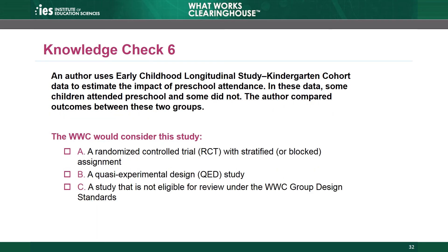Knowledge Check 6. An author uses early childhood longitudinal study kindergarten cohort data to estimate the impact of preschool attendance. In these data, some children attended preschool and some did not. The author compared outcomes between these two groups. The WWC would consider this study: A, a randomized controlled trial with stratified or blocked assignment; B, a quasi-experimental design study; or C, a study design not eligible for review under the WWC group design standards. The answer is B — it's a QED. The two groups are not the result of random assignment. The study authors compared two distinct, naturally occurring groups: children who did and did not attend preschool. Choice A is incorrect because the study did not use random assignment. Choice C is incorrect because the study design has a distinct comparison group.